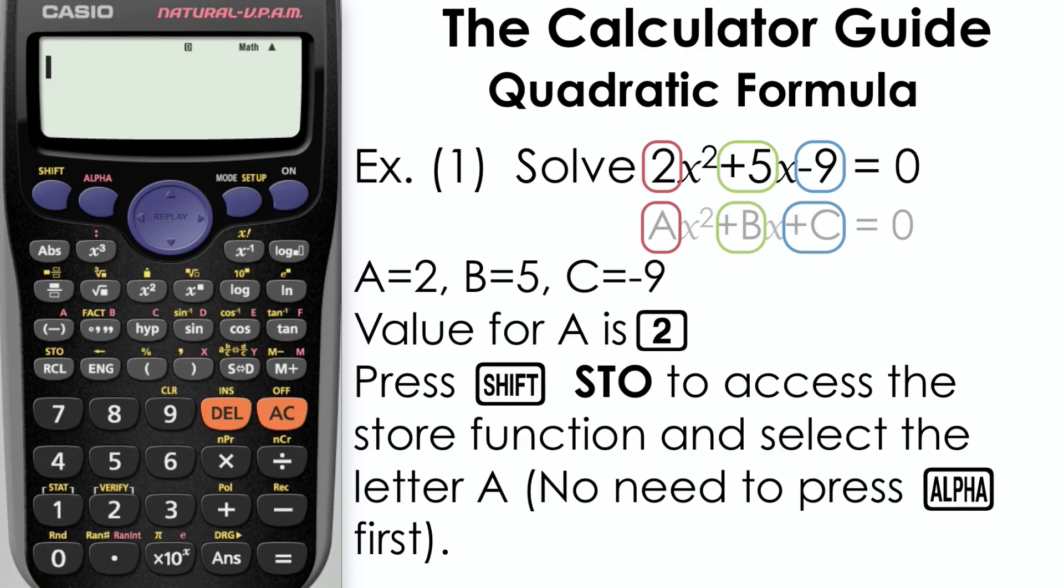The value for a is 2, so we need to press 2, then press SHIFT and STO, and then we just need to press the button for A. There's no need to press ALPHA first; it should automatically come up with the letter A.